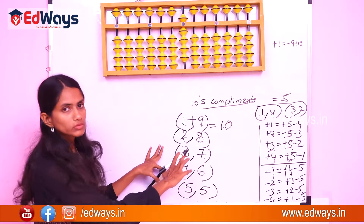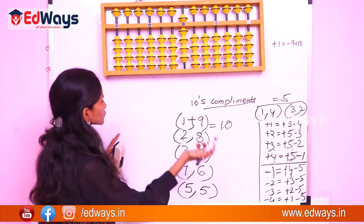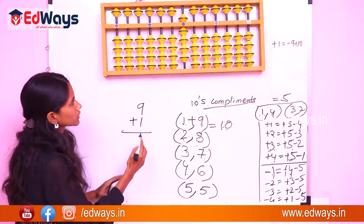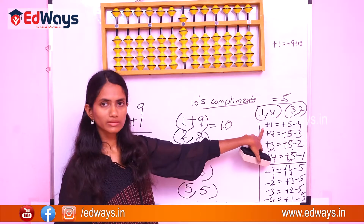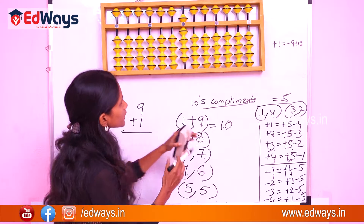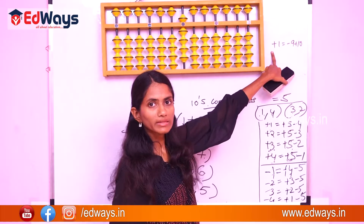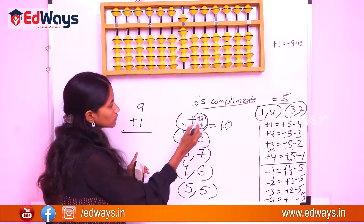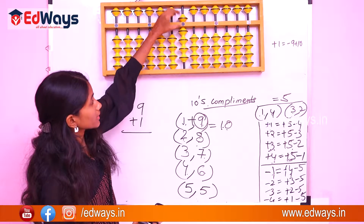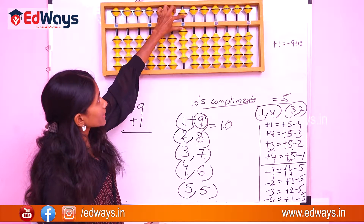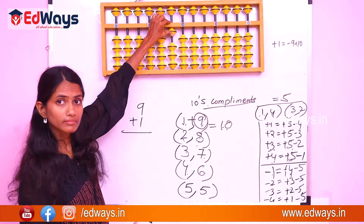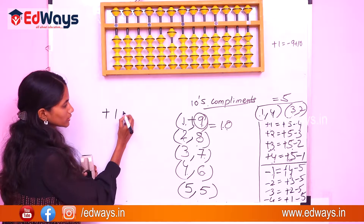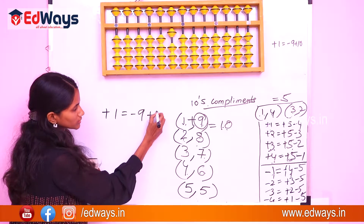Now let us use tens complements. For the previous sum with 9, we need to add plus 1 but couldn't do it with fives complements. So here, plus 1 equals minus 9 plus 10. That is: what is 1's complement? 9. So we subtract the complement and add 10. Plus 1 equals minus 9 plus 10.